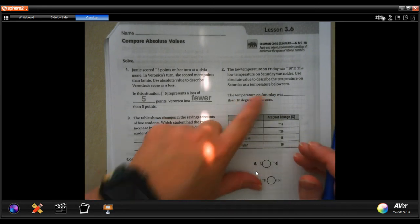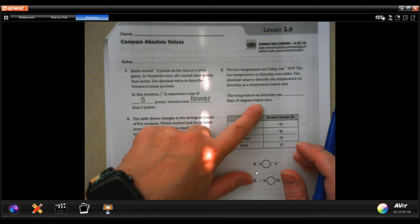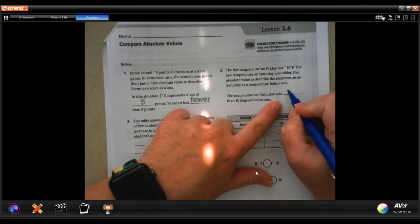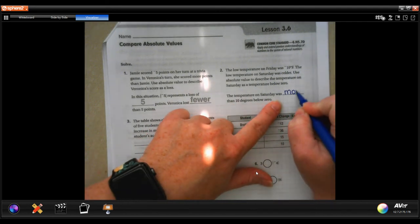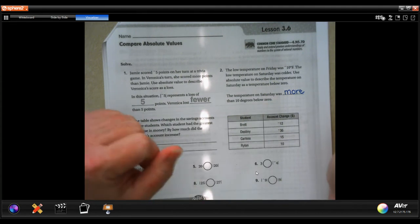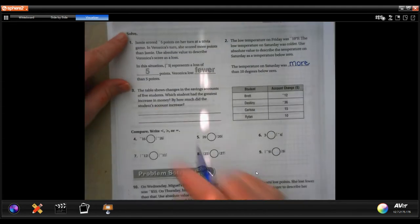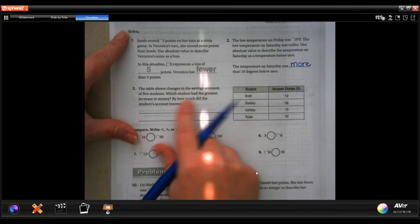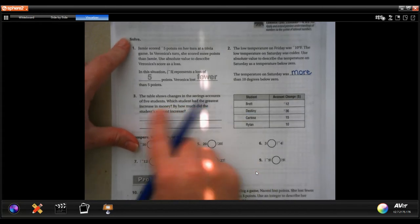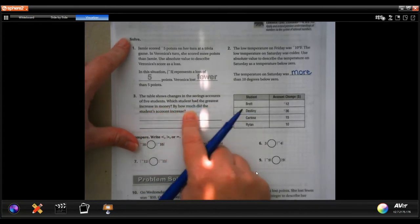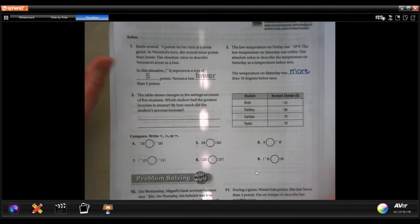It says the temperature on Saturday was blank then 10 degrees below zero. Well, it was more than 10 degrees below zero. The table shows changes in the savings account of five students. Which student had the greatest increase in money and by how much did the student's account increase?